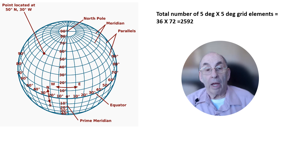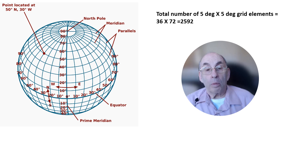To obtain this global average temperature, climate scientists divide the surface of the earth into a grid such as the one shown in this image. In the image, the surface of the earth has been divided into grid elements that are 10 degrees of longitude by 10 degrees of latitude. When they compute the average global surface temperature, climate scientists use smaller grid elements — ones that are 5 degrees of longitude by 5 degrees of latitude. Four of these smaller grid elements would fit into each grid element shown in the picture.